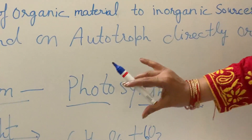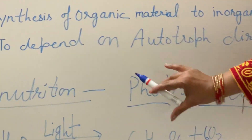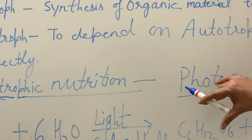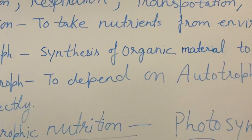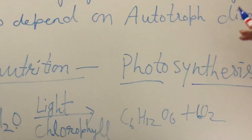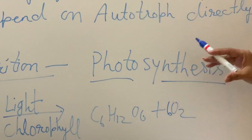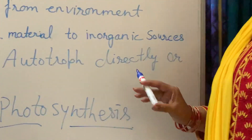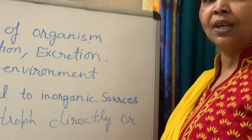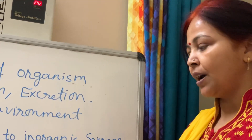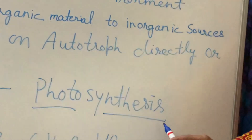This type of nutrition is known as autotrophic nutrition. In green plants, autotrophic nutrition takes place, and that process is known as photosynthesis, because light is used as a source of energy.